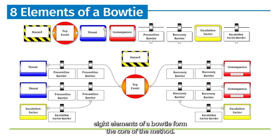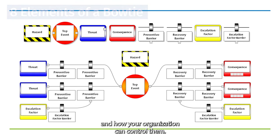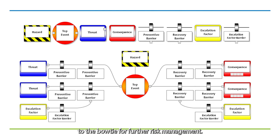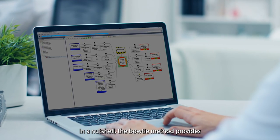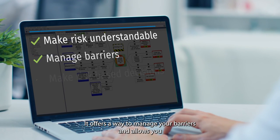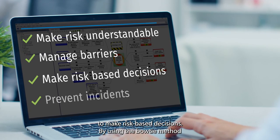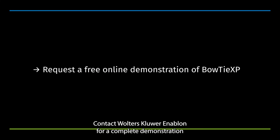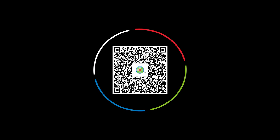These eight elements of a Bowtie form the core of the method. It gives you a visual diagram that summarizes all unwanted scenarios and how your organization can control them. After completing your full Bowtie diagram, you can add metadata for further risk management. In a nutshell, the Bowtie method provides a systematic structure to analyze risk and make it understandable. It offers a way to manage your barriers and allows you to make risk-based decisions. By using the Bowtie method, you can prevent incidents, keep your workers safe, and guarantee business continuity. Contact Wolters Kluwer Enablon for a complete demonstration of the Bowtie method and the use of BowtieXP software.